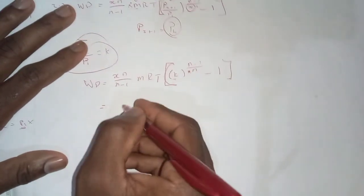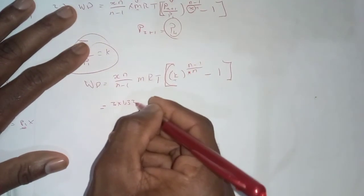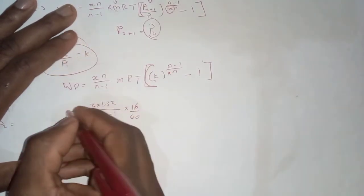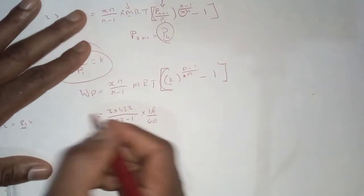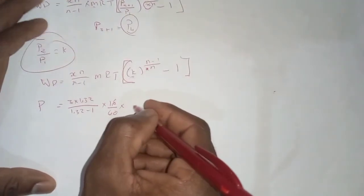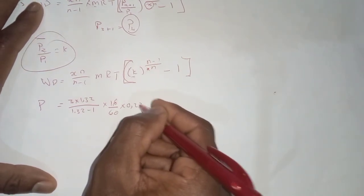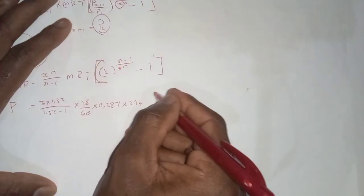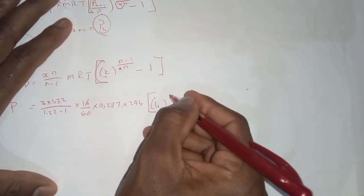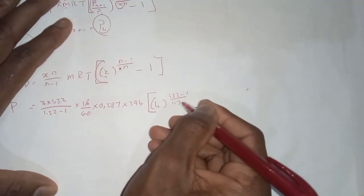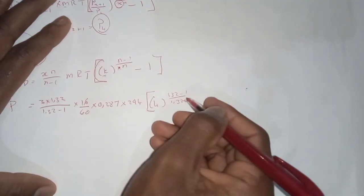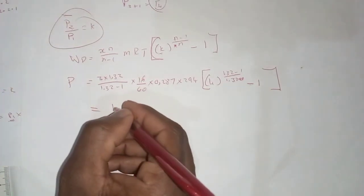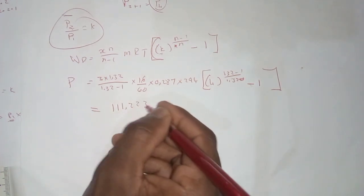Substituting: X is 3, N is 1.32 divided by (1.32 minus 1), M is 16 divided by 60, R is 0.287, T1 is 294, and K raised to (1.32 minus 1) divided by 1.32 minus 1 with K equals 4. This gives a power of 111.223 kilowatts. That is how we answer this question.